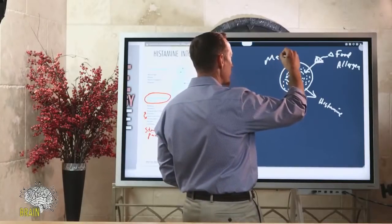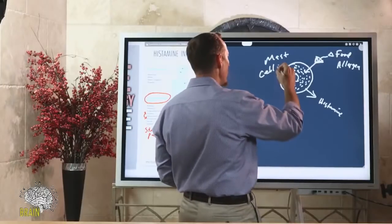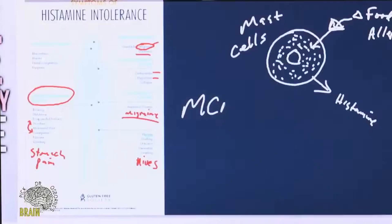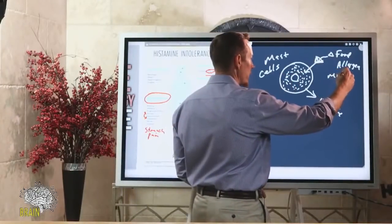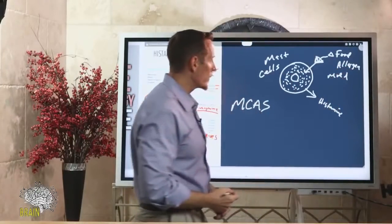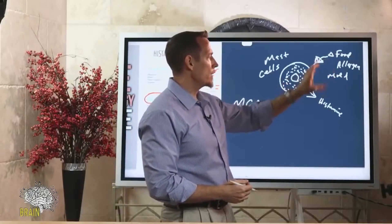You might be thinking about mast cell activation syndrome — MCAS — which is when these cells become overburdened and are constantly releasing histamine. Food allergens can certainly play a role, but so can other environmental exposures. Mold exposure is a very common activator of mast cells, and many people end up developing histamine elevation and histamine intolerance as a result.